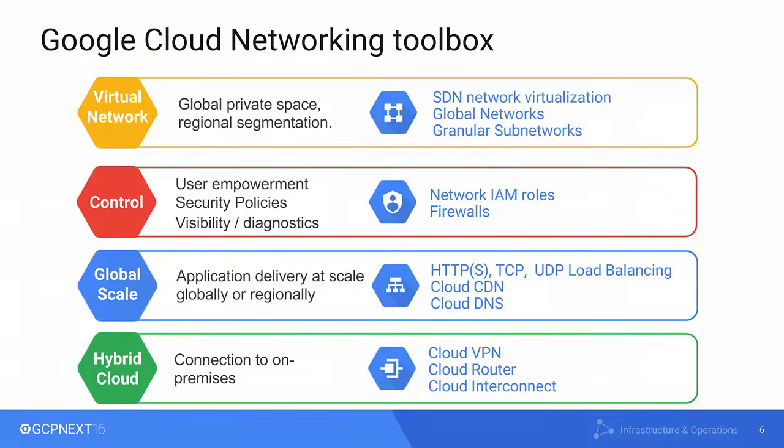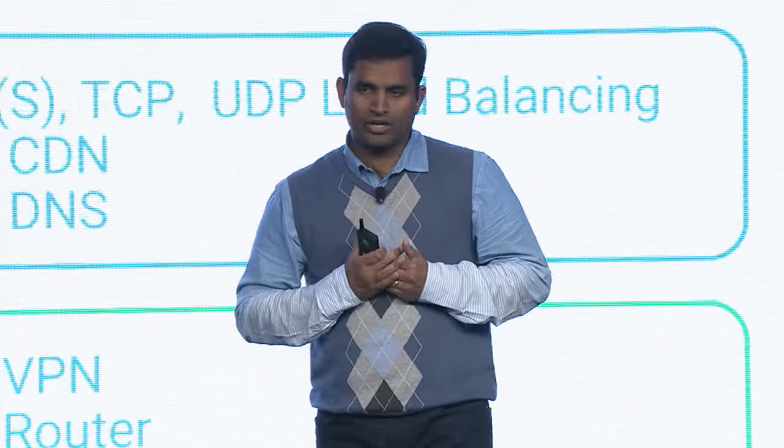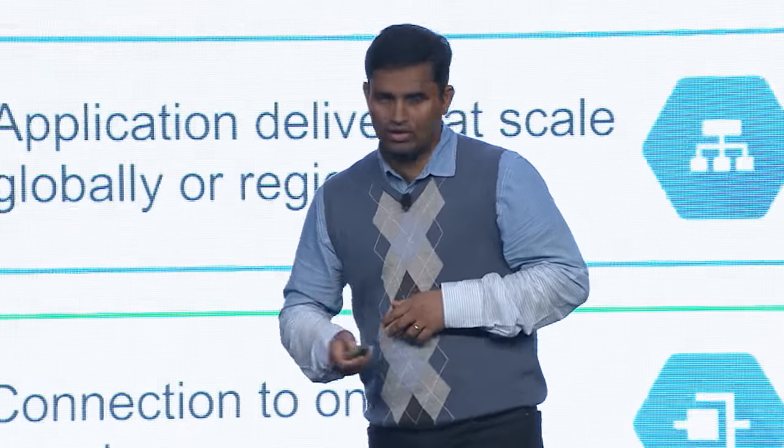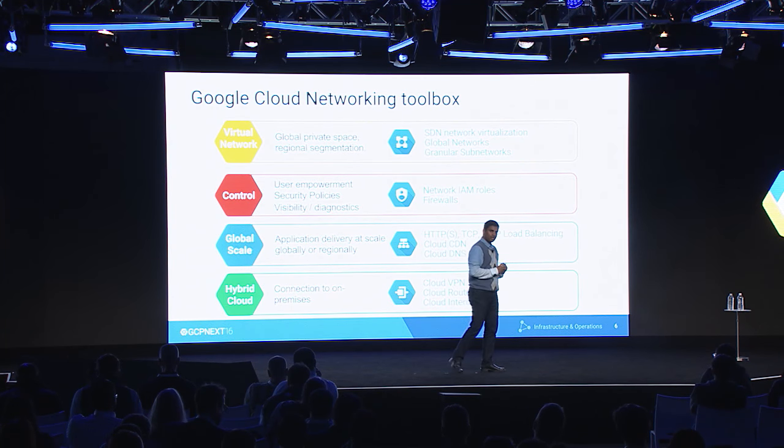The final category is hybrid offerings. If you want to partially move your application to Google Cloud, extend or scale out your on-premises sites, we have three different products: Cloud VPN using IPsec tunnels at 1.5 Gbps per tunnel, Cloud Router for BGP functionality to dynamically learn topology changes between on-premises sites and Google Compute Engine, and Cloud Interconnect to connect directly to us or through a carrier exchange. This entire feature set is now sufficient for you to migrate to Google Cloud.